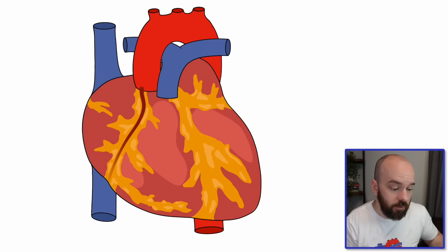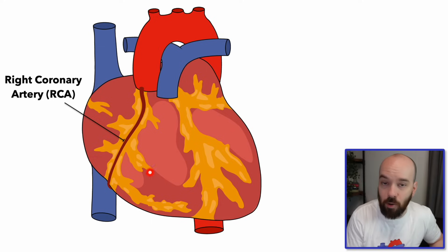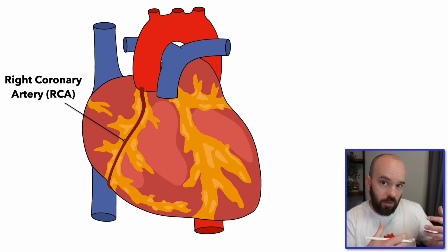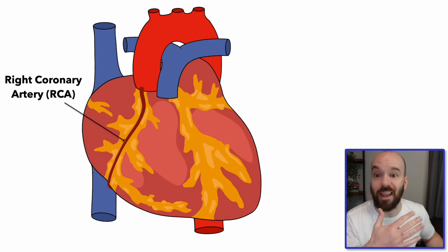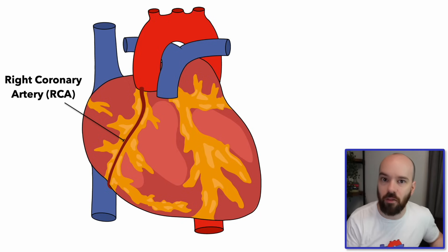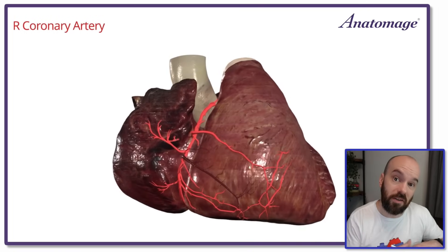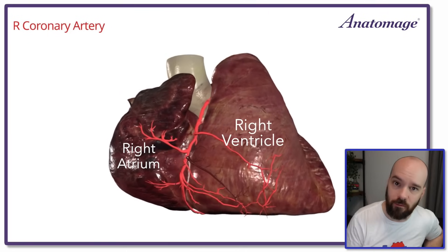The first coronary artery is the right coronary artery. We can see it branching off the base of the aorta, descending down to the bottom of the heart, and then going back to the posterior side. This is an anterior view — imagine looking directly at the front of the heart. The right coronary artery visually separates the right atrium from the right ventricle. Here we can see it three-dimensionally in our Anatomage clip, separating the right atrium from the right ventricle.